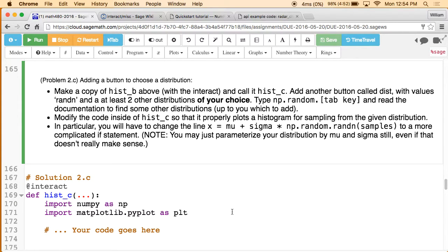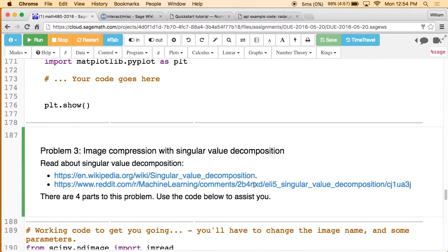And then here you will add another button that lets you change the distribution. That histogram was a plot of sampling from the normal distribution, but you can sample from other distributions that are provided by NumPy. So you'll just choose two others and then adopt the code so that it samples from those other distributions. That's problem two.